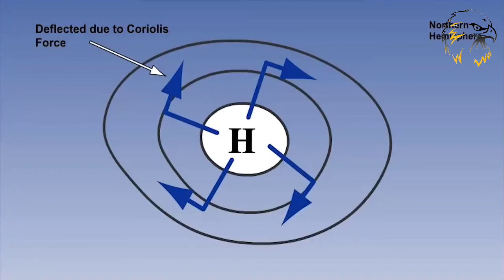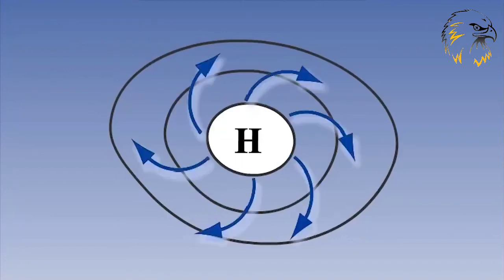If you remember, it deflected wind to the right in the northern hemisphere and to the left in the southern hemisphere. In summary, we can say that air moves around high pressures clockwise in the northern hemisphere and anticlockwise in the southern hemisphere.